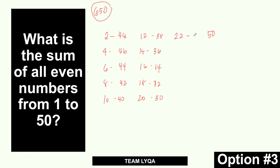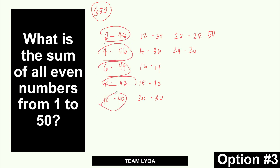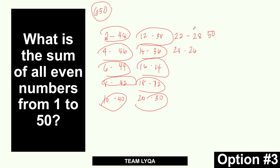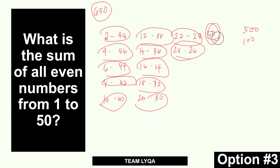Continuing: 22 + 28, and 24 + 26 — and that completes all the pairs. So how many 50s do you have? Count them: you get 12 pairs — that's 12 × 50 = 600 — plus the lone middle term 50 itself, giving you 650. The answer is still 650. So again, you can choose: list and add, use the formula, or find pairs. You still get the same answer.